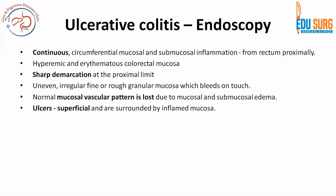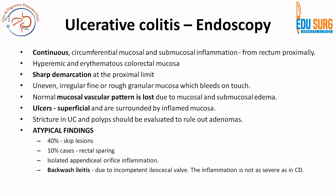In ulcerative colitis, disease extends from rectum proximally with a sharp demarcation at the proximal limit. There can be irregular, uneven, fine granular mucosa which bleeds on touch, and the normal mucosal vascular pattern is lost due to edema. If ulcers are present, they are superficial. Strictures are less common in UC since it is a mucosal and submucosal disease; if strictures are present, they are suggestive of malignancy requiring further evaluation. If there are polyps or pseudopolyps, they must be evaluated to rule out adenomas.